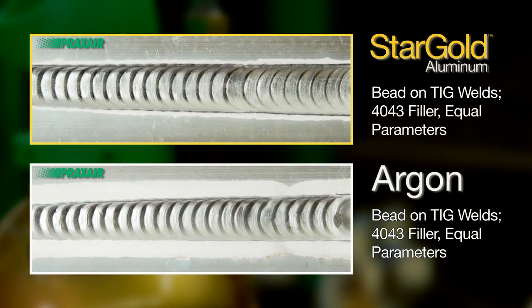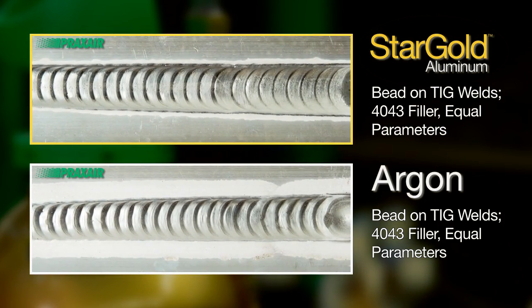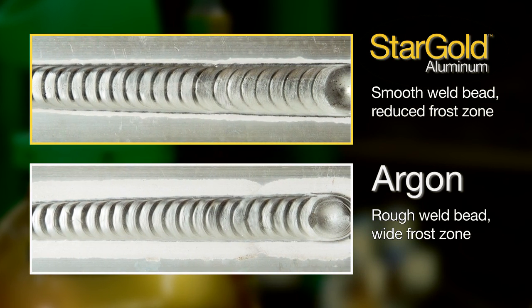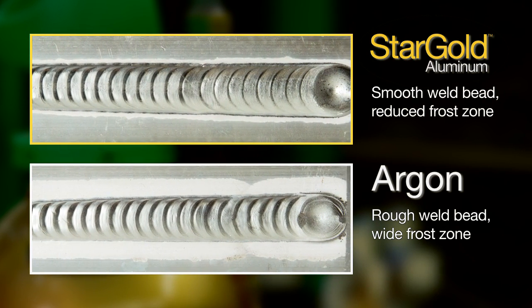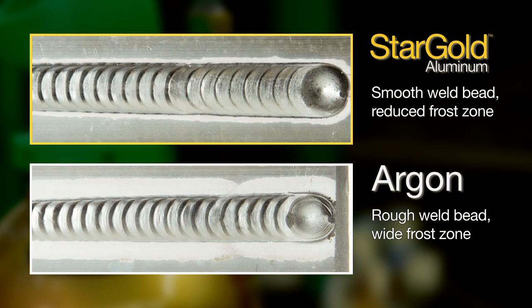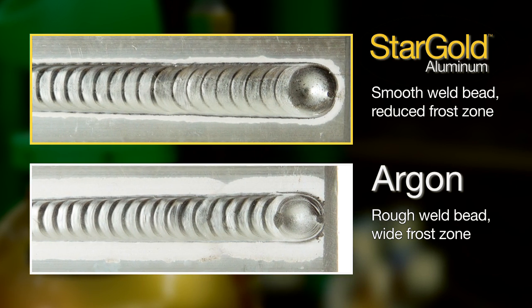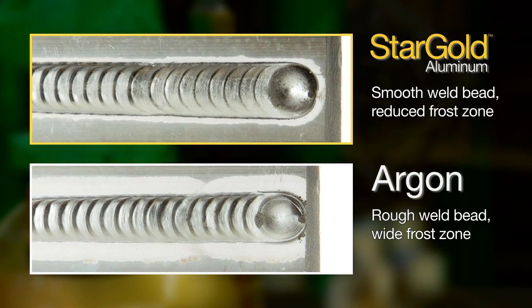As shown in these photographs, the use of Stargold Aluminum can help create a reduction in the cleaning or frost zone, and an increase in weld bead smoothness and wetting characteristics. This is a result of the increased arc stability obtained when using Stargold Aluminum.